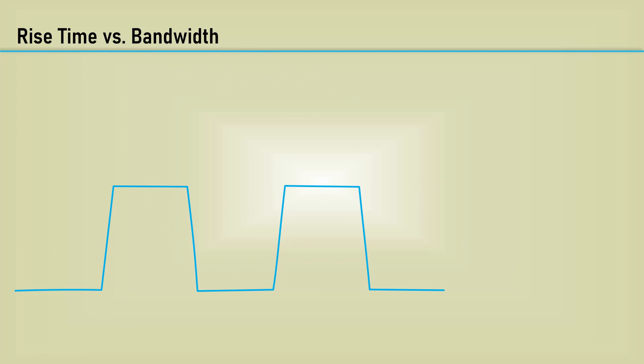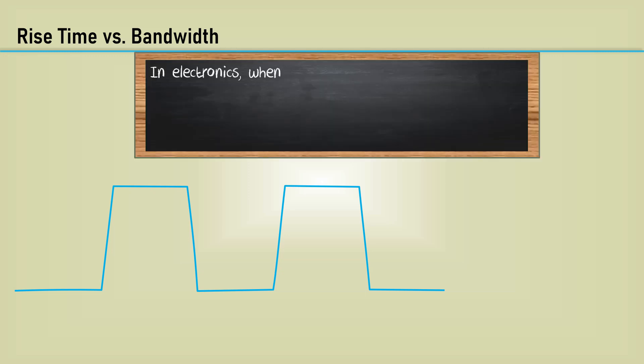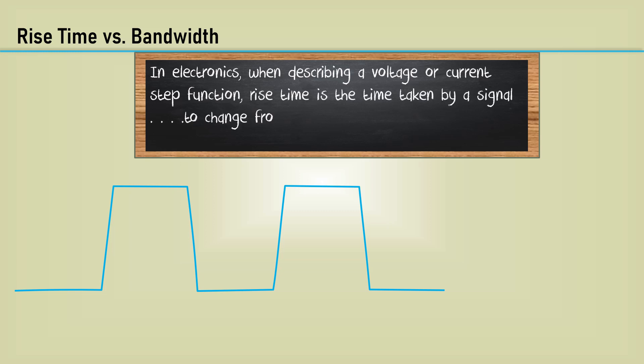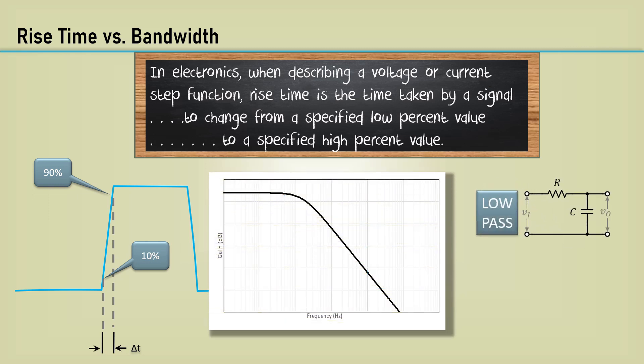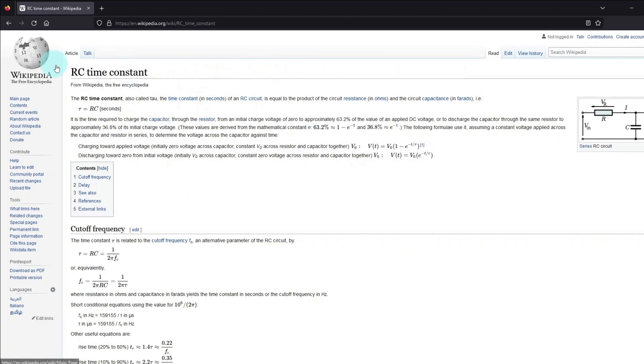A mathematical relationship exists between the rise time and bandwidth of a system. In electronics, when describing a voltage or current step function, rise time is the time taken by a signal to change from a specified low percent value to a specified high percent value. It's most always defined between 10% and 90%, although 20 to 80% is sometimes used. This applies to a single or dominant pole low-pass system, where the bandwidth is the cutoff frequency or the minus 3 dB point. The formula for the bandwidth is 0.35 over the rise time.